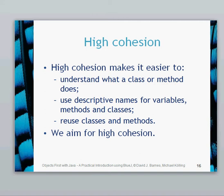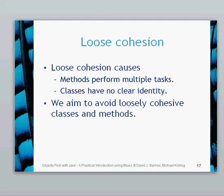If you use descriptive names for variables, methods and classes, it's much easier to give those descriptive names. It's difficult to name a method that adds two numbers, multiplies two numbers and divides two numbers. It's much better if you can say 'this method adds two numbers.' With high cohesion we get the ability to actually reuse classes and methods, so we aim for high cohesion.